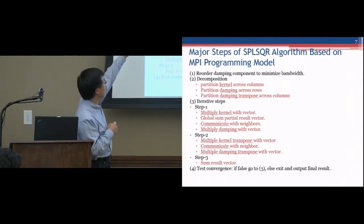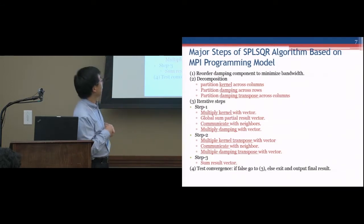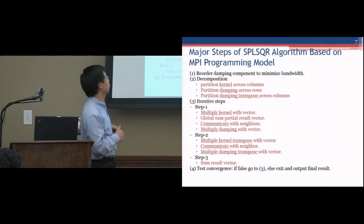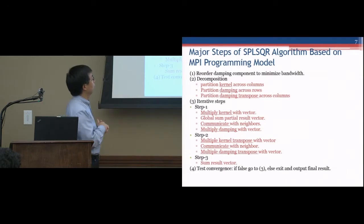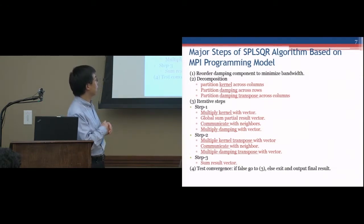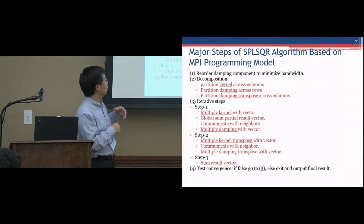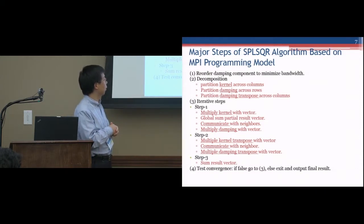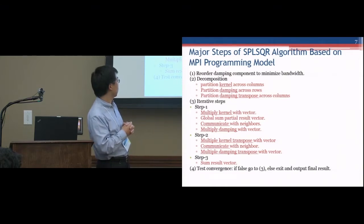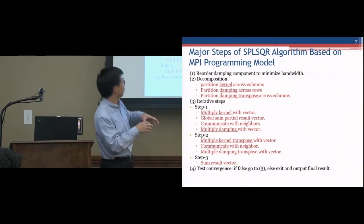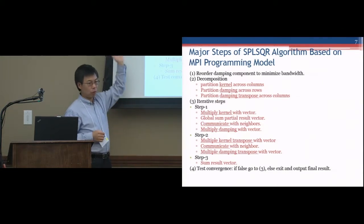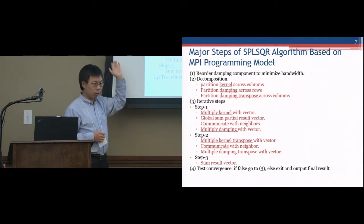In the third step, that's the iterating step. We do the matrix multiply vector: multiply the kernel with a vector, and then do communication with neighbors, and multiply the damping with vector. Similarly, in step two we do the kernel transpose and the damping transpose, and multiply the vector. That's the iterating steps, similar to all linear solvers.